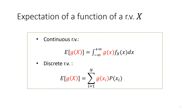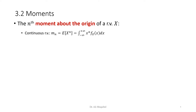If we extend this to higher order, we get what we call the moments. The moment about the origin, or the nth moment about the origin, is defined as the expected value of x raised to power n. Applying the definition, you get x raised to power n multiplied by the PDF — this is called the moment about the origin.